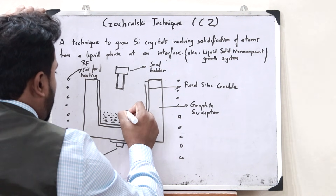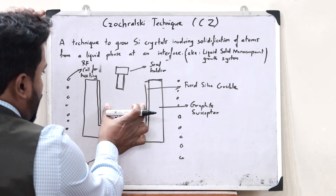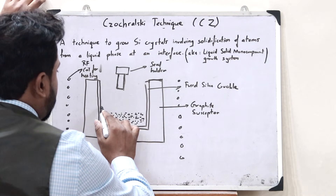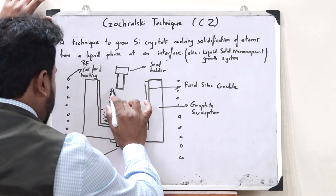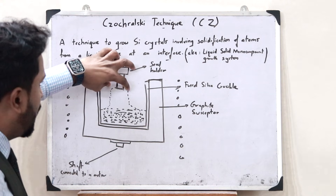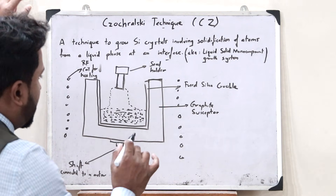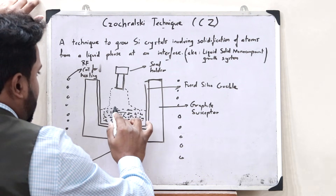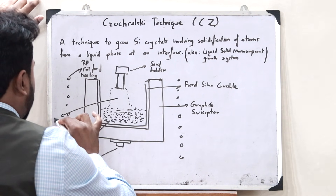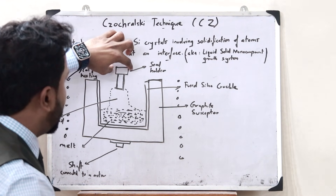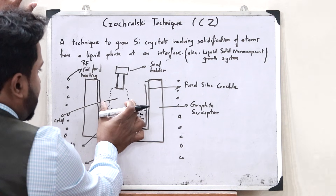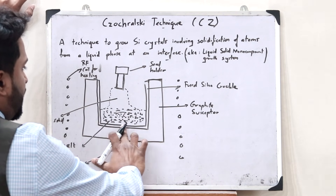Once we have dipped the seed into the molten silicon, we slowly start pulling it upward. As we pull it up, we observe that freezing occurs at the solid-liquid interface, and here we get the required silicon crystal. The seed holder continuously pulls the crystal upward, and because of freezing at the interface, we get a long silicon crystal grown from the melt.